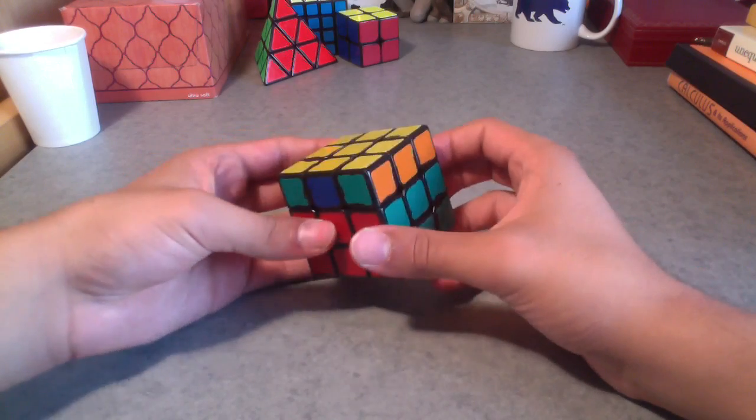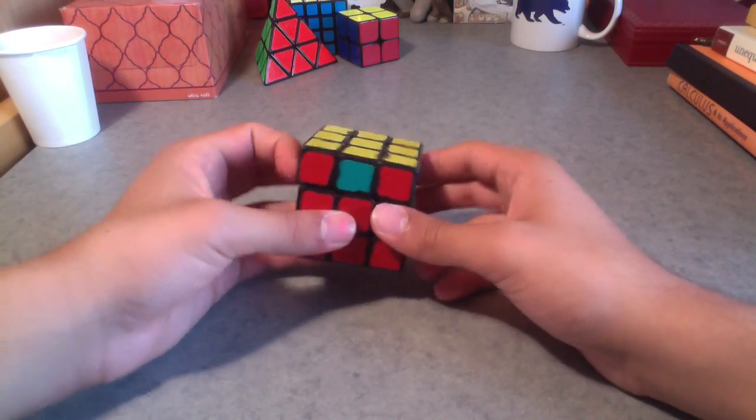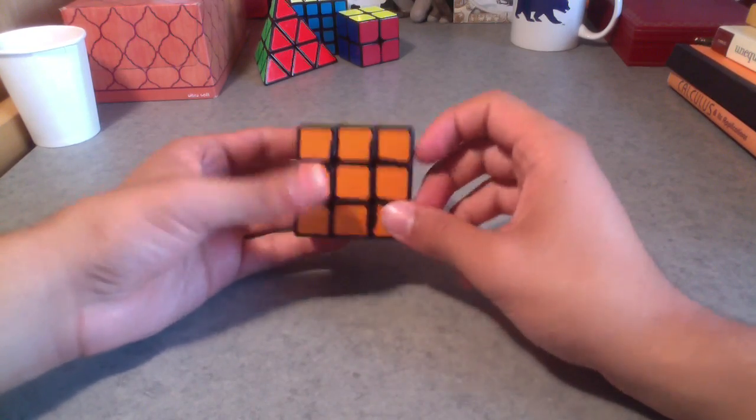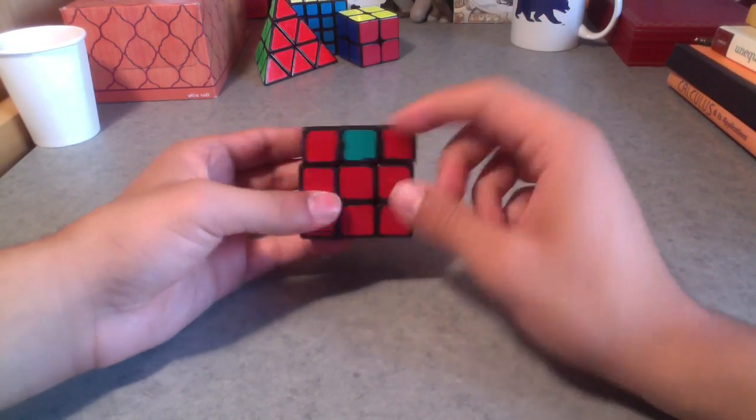So yeah, I just un-rotate the cube and I see that I have the corners all solved now. So I can move the top layer. I have this bar thing, and now we're good.